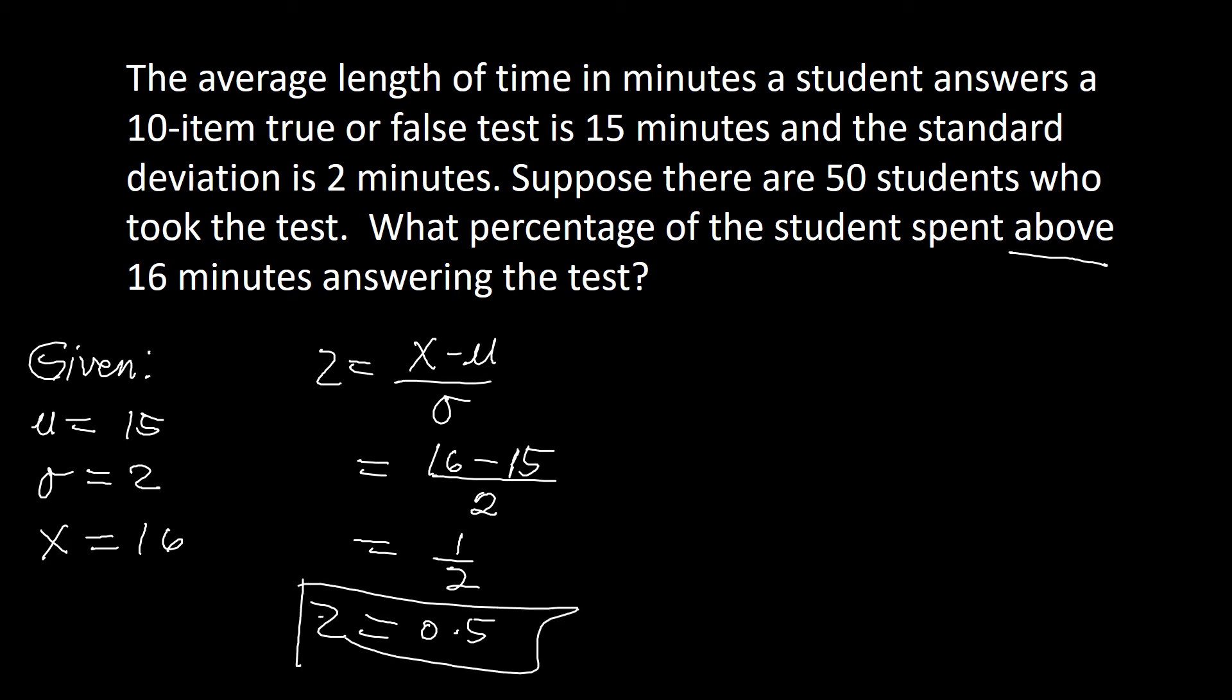So since this is above, that means to say what we are looking for is this area or this probability wherein your z here is greater than 0.5 as well. So that's similar to the example a while ago.